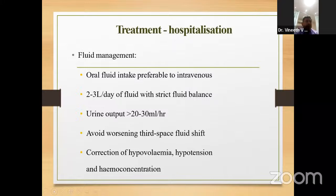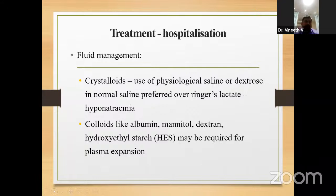For inpatient fluid management, oral fluids should be preferred. IV fluids of 2 to 3 liters with strict fluid balance are recommended. Urinary output should be greater than 20 to 30 mL per hour. Avoid worsening third-space fluid shifts; prevent hypovolemia, hypotension, and hemoconcentration. Crystalloids like normal saline can be used, but Ringer's lactate should be avoided due to hyponatremia. Colloids like albumin, mannitol, dextran, and hydroxyethyl starch may be required for plasma expansion — HES is particularly useful.